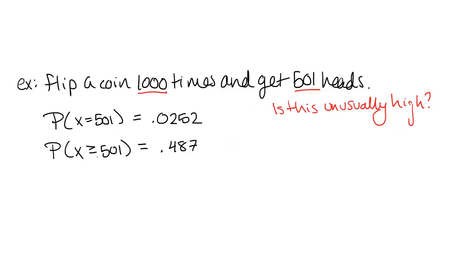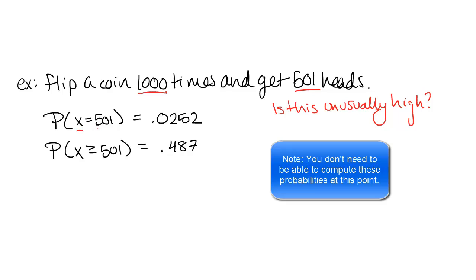But if you look at the probabilities here, the probability that you get exactly 501 heads is actually fairly small. This is about 2.5%. And if you think about it, it shouldn't be too surprising because there's a lot of different outcomes here. You could have 502 heads or 499 heads. And all of those are fairly likely, but because there's so many different possible outcomes, the probability of getting exactly 501 is going to be relatively small.